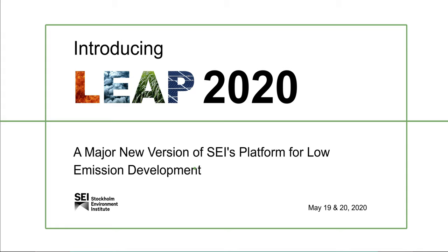We have a really packed program for you today. We're going to be demonstrating some of the new features of the brand new 2020 version of Leap. Leap is a software tool developed at SEI that is widely used around the world for integrated planning of energy policy, climate change mitigation, and air pollution abatement. Leap helps its users to explore alternative energy development pathways and assess their implications in terms of energy use, emissions, economic costs and benefits, and health and ecosystem impacts. Leap is notable for being a complete decision support system, not just a modeling tool.